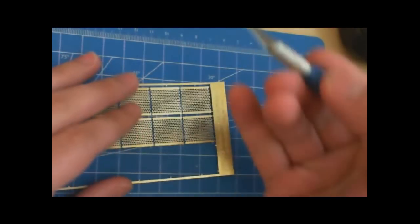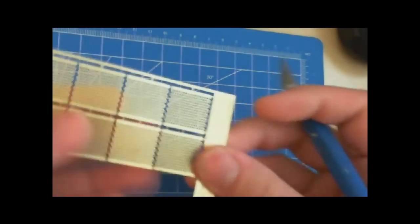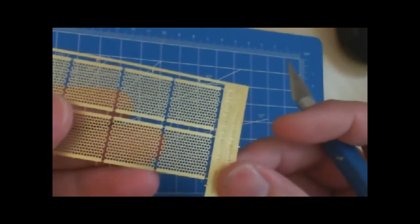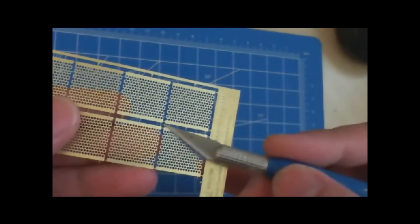I'm just going to take my hobby knife and snip these very small frets. You can see how small those frets are in between the individual sheets.